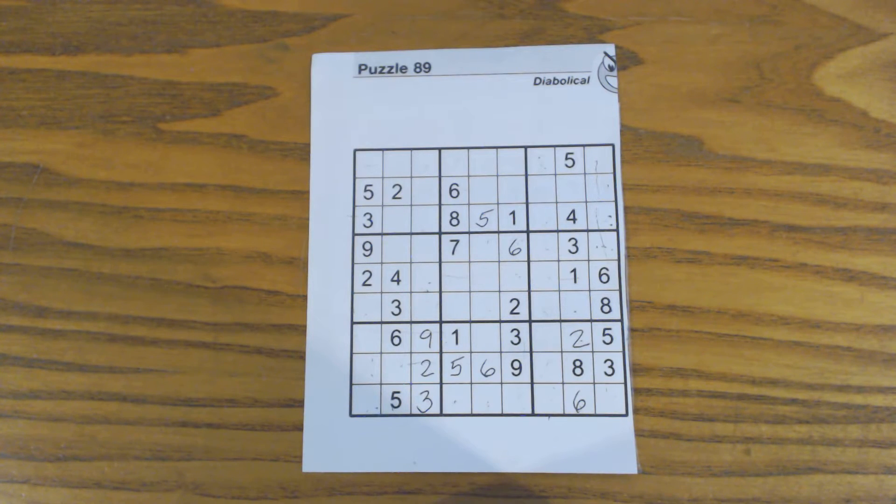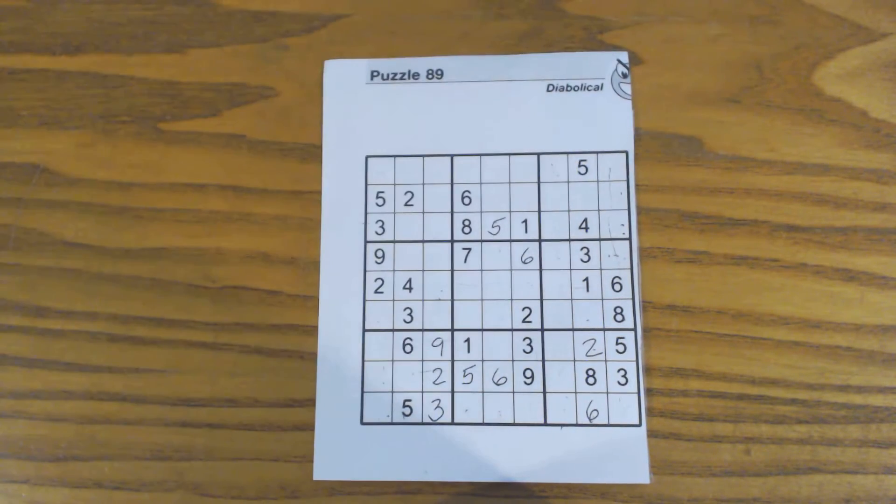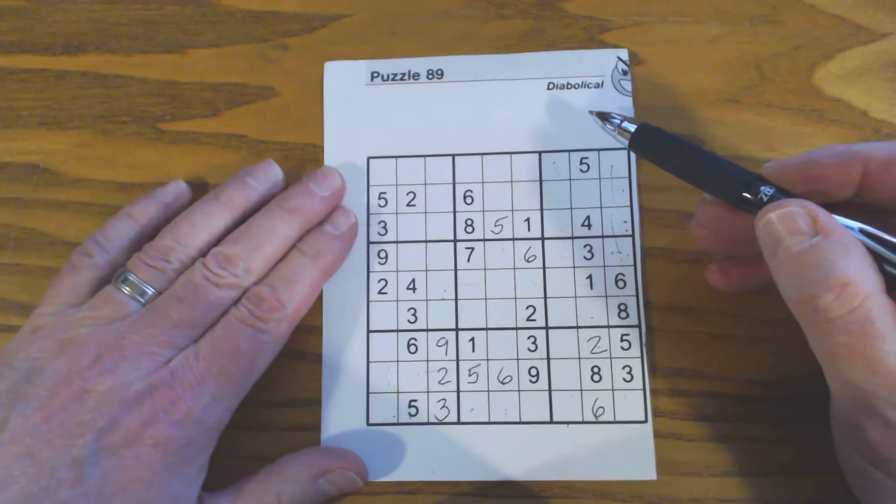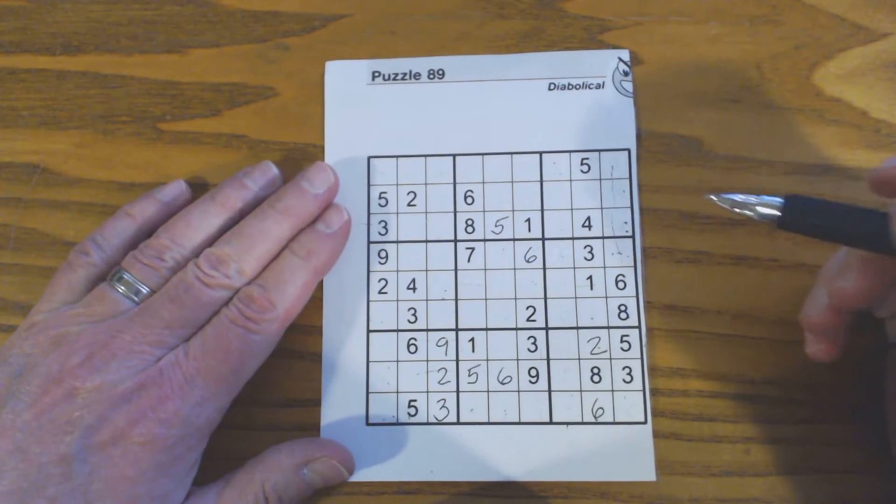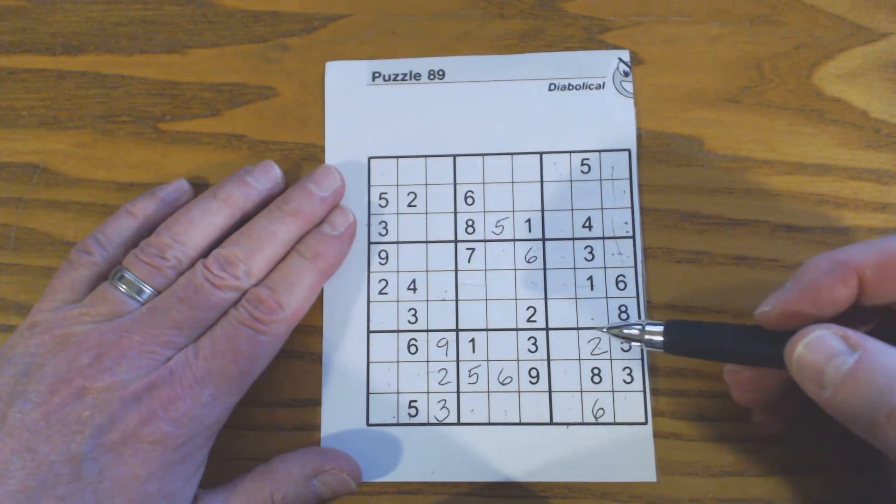This is puzzle number 89. It's from Sudoku to Go, volume 88, by Soap Opera Digest. This is a diabolical puzzle. It's the hardest level in this book, so it's kind of more for expert level solving.